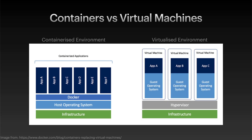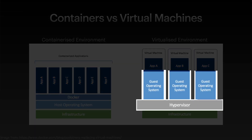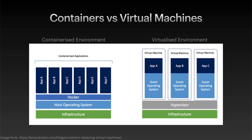Compare this to the VM stack on the right, where you can see four kernels — the hypervisor and three guest OSs — all in the same infrastructure. And obviously, all those OSs take up resources that ultimately result in the host only having capacity to host three apps.